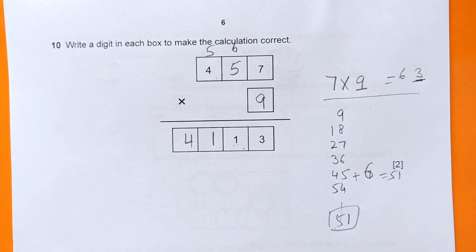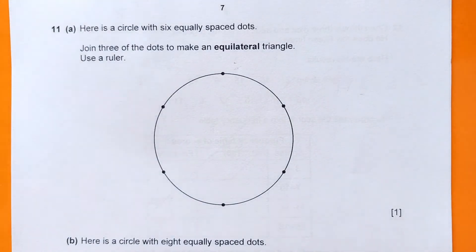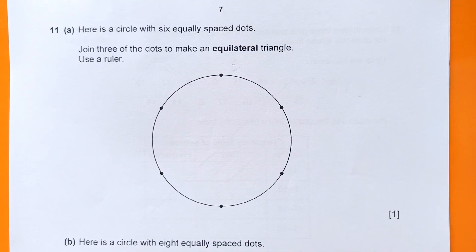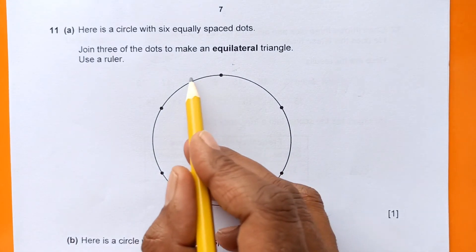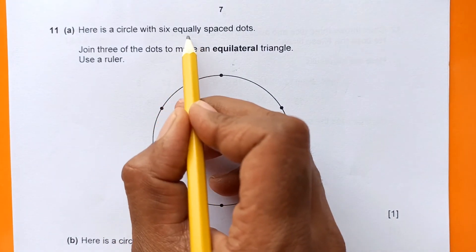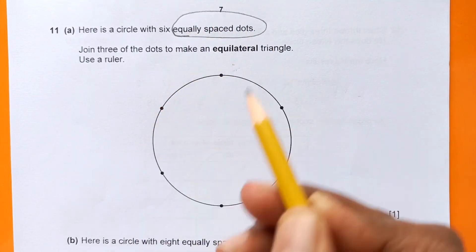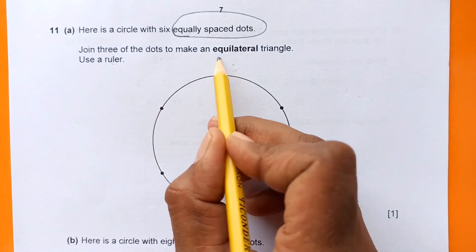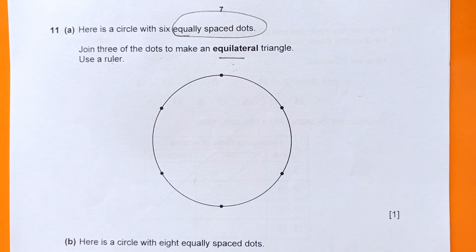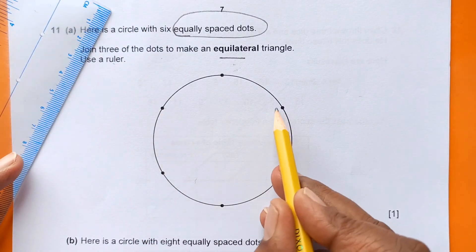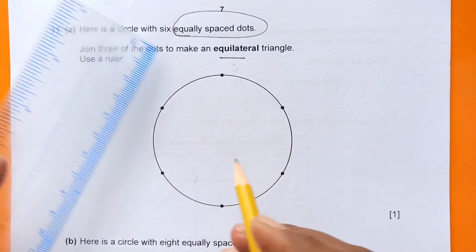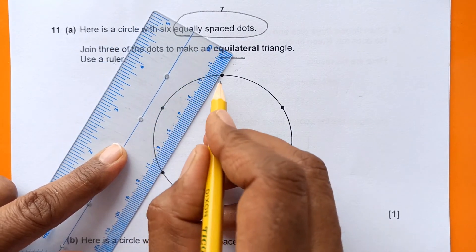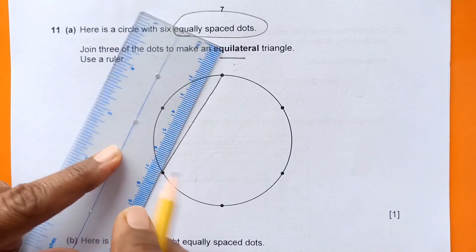Question 11: Here is a circle with six equally spaced dots. Join three of these dots to make an equilateral triangle. An equilateral triangle has all three sides equal. We can join alternating dots — either every other dot going clockwise — to make an equilateral triangle. I'm joining this set of three dots.